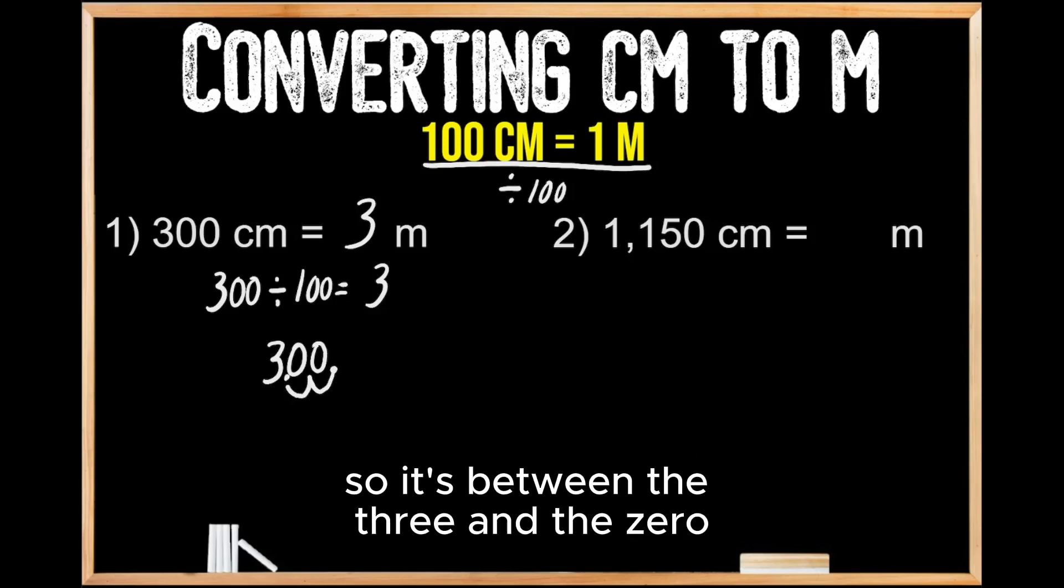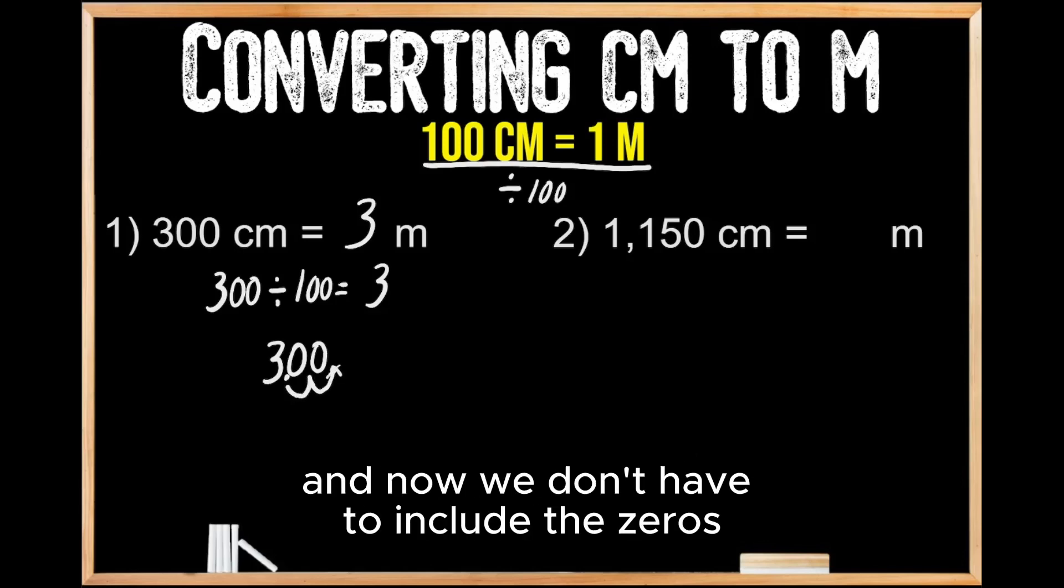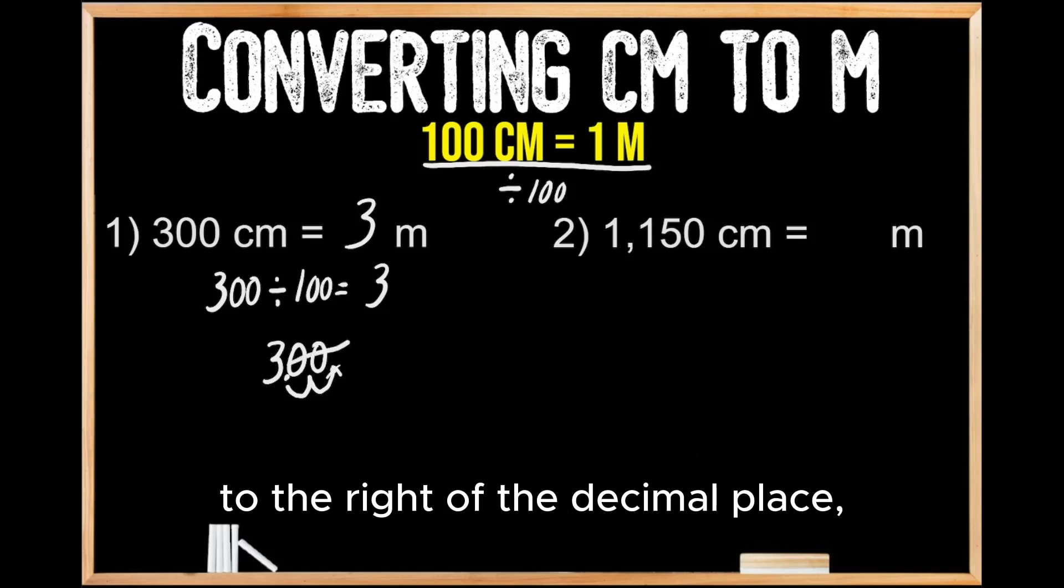So it's between the three and the zero. And now we don't have to include the zeros to the right of the decimal place. So we get the answer of three, just like we did up top.